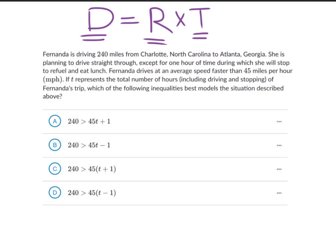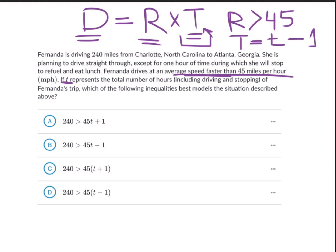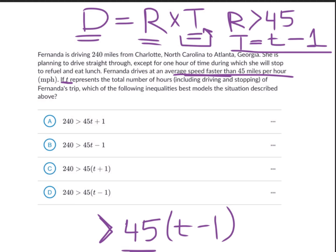In Fernanda's case, the rate isn't exactly 45 miles per hour — they said it's faster than 45, so the rate is greater than 45 miles per hour. The time spent driving: T represents her whole trip, but she wasn't covering distance the entire time. The time covering distance equals T minus the one hour she stopped to rest. So to put this together, 45 × (T − 1) represents a lower bound on distance, but since she drives faster than 45, the actual distance 240 is greater than 45(T − 1). Looking at the options, this matches option D.